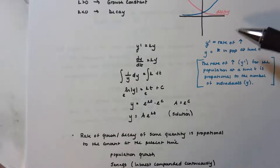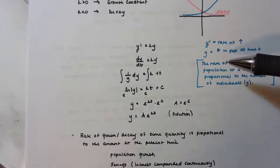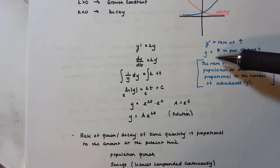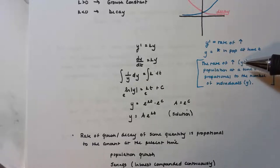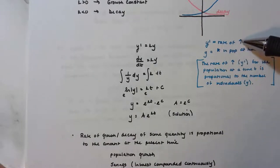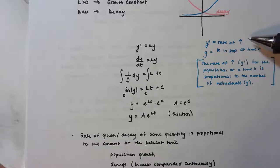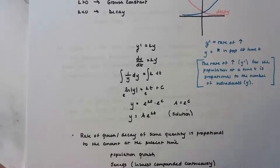A side note on proportionality: the rate of increase — y prime — for a population at time t is proportional to the number of individuals in the population. It could be animals on a reserve, people, etc. The problem with exponential growth is that organisms don't grow without bound — eventually they taper off, because if people grew exponentially there wouldn't be enough resources on the planet to sustain us.